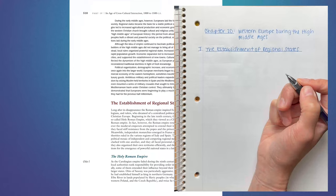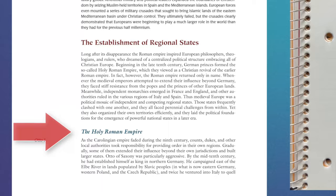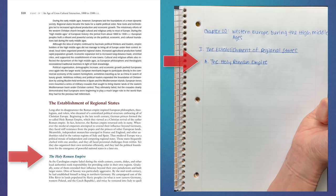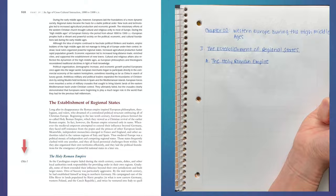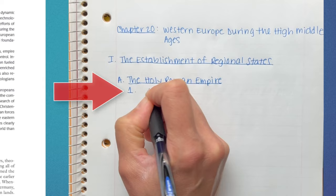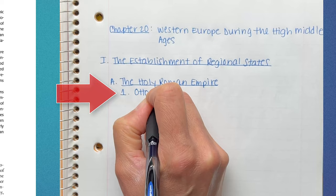Now we will move to the blue subheading titled The Holy Roman Empire. In my outline, I will skip a line, indent, and write a capital A followed by the blue heading title, and I will underline this title. Since there is a small title in the margin here, I will indent yet again and write Arabic numeral number 1, followed by a period and the title: Otto I. Now we have come to some text that we will need to condense into our outline.